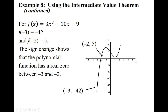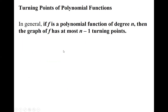This graph turns twice — it changes direction from increasing to decreasing and from decreasing to increasing. The degree of this function is 3. In general, if f is a polynomial of degree n, the graph has at most n minus 1 turning points. So a cubic has at most 2 turning points; a fifth-degree polynomial has at most 4, and a seventh-degree at most 6.